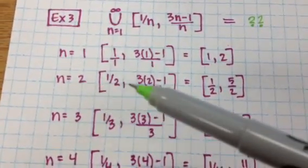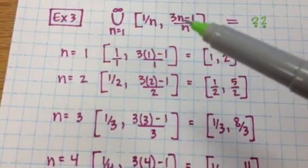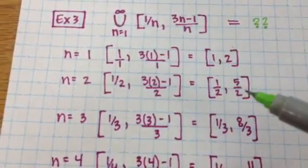And then I plug in 2, do a little bit of math, I'm plugging it in where the n's are right, n is 2 this time, and I get another closed interval.